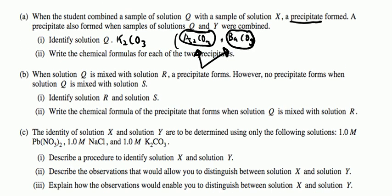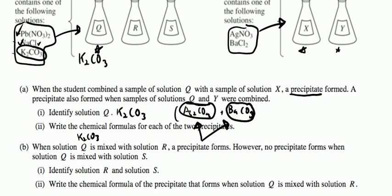So, it says when solution Q, which is K2CO3, is mixed with solution R, a precipitate forms. However, no precipitate forms when Q is mixed with S. Identify R and S. So, here we go. K2CO3. If we mix it with NaCl, we get Na2CO3 and KCl. No precipitate. So, we know that S must be NaCl because it said no precipitate formed. So, S equals NaCl.